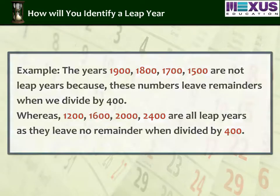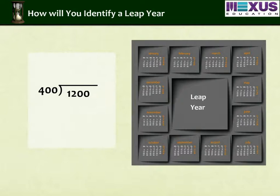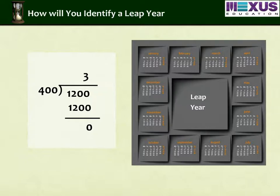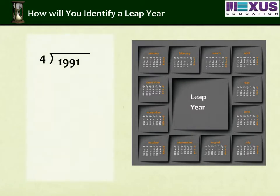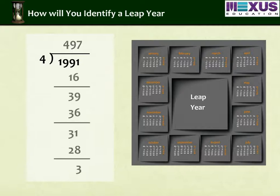Let us see an example. Divide 1200 by 400: quotient 3, remainder 0. Therefore, 1200 is a leap year. Divide 1991 by 4: quotient 497, remainder 3. Therefore, 1991 is not a leap year.